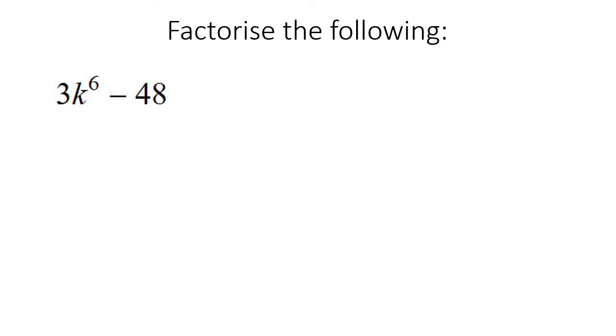So with this one, we're definitely going to have to take out a 3 first, and then you'd be left with k⁶, take away 16. So this is a difference of squares. You might be thinking, how can I get that? Well, imagine you had a k³ and a k³. What is k³ multiplied by k³?